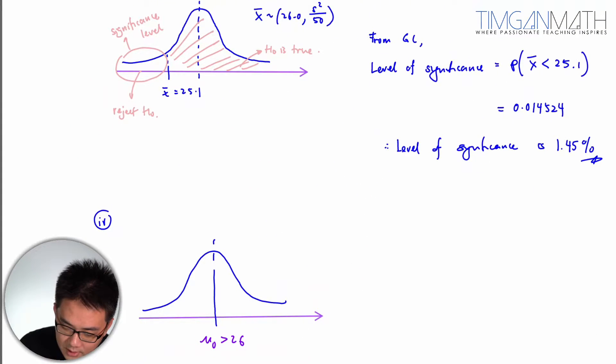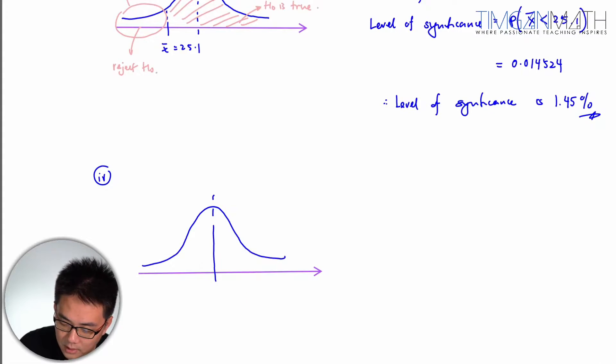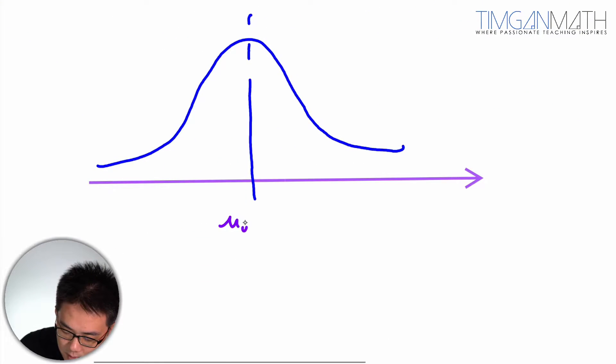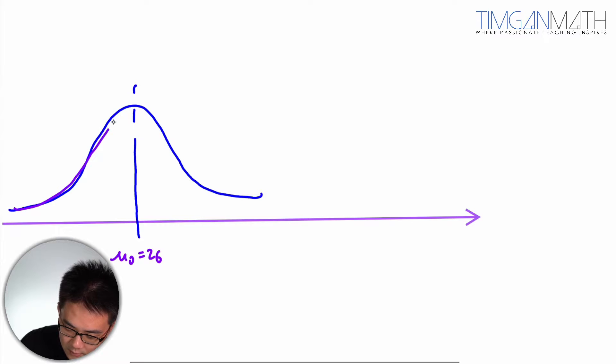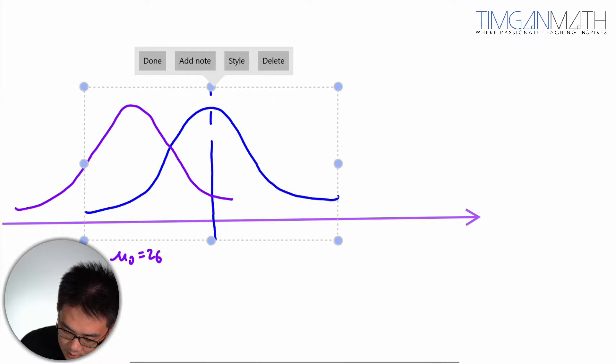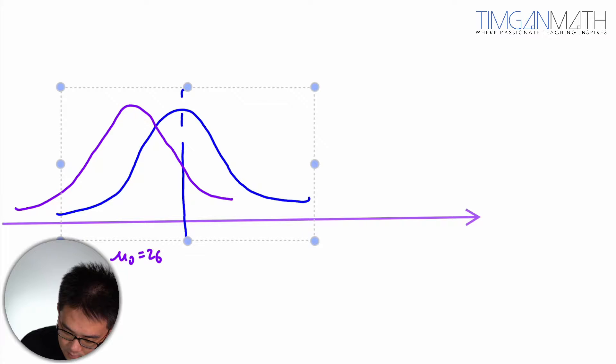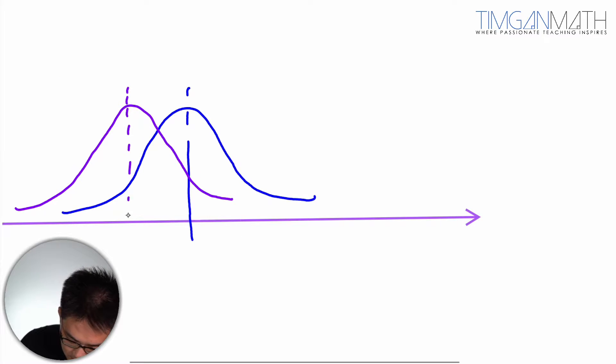Originally the curve was this, but you move to the other side. So mu naught is actually more than 26. So 26 would be somewhere here. But because you have the same, so let me, I think I'll just do the, so this is mu naught equals to 26, right? So you draw another one, this would be like the same curve. But you move to the other side. So this is a new normal curve.